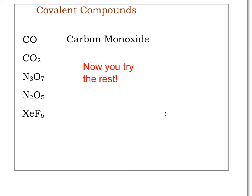The very first one I went ahead and did for you. We have carbon first, so we're going to name carbon. Notice how I left out the mono. Mono can be left out only if it's the first element. If it's the second element and it's mono — meaning one — then we have to include it. Here I included mono for 'monoxide,' because there is one carbon and also one oxygen.